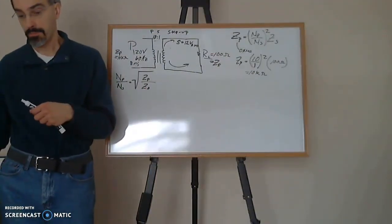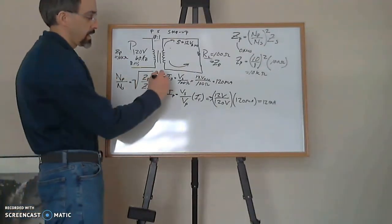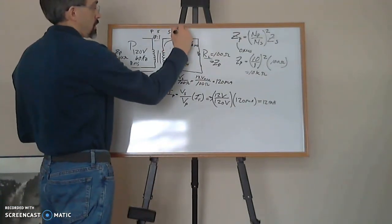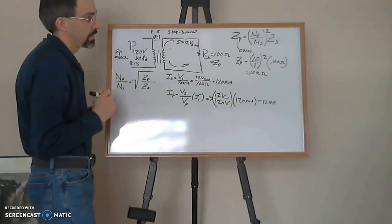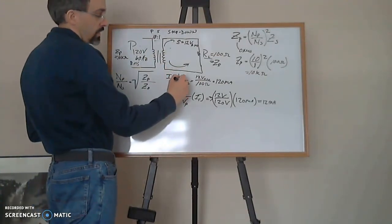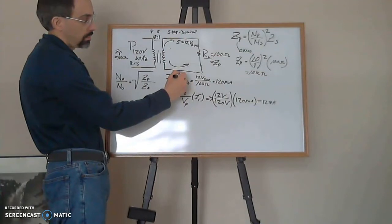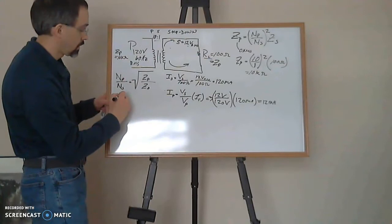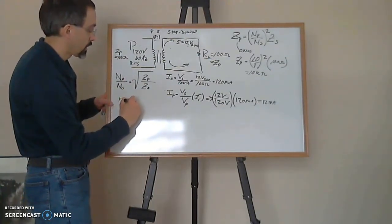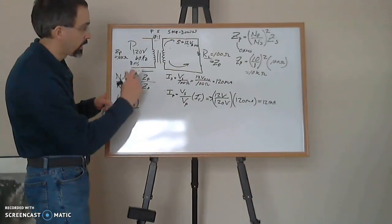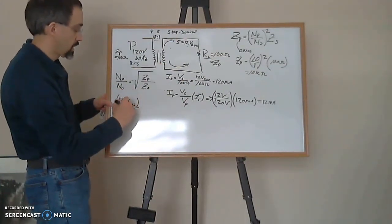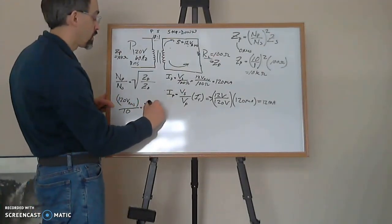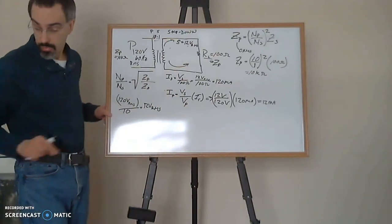The first thing we want to do is find Is, the secondary current. Remember the secondary side, this is actually a step-down transformer. So Is equals Vs over 100 ohms, where Vs is 12. If I take 120 volts RMS on my primary divided by my 10 turns, I get 12 volts RMS.